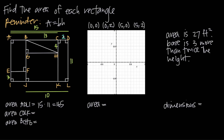Since the length of CD is 2 and I have right angles, the length of KL will also be 2. So the area of rectangle CDLK is base 2 times height 11, which gives us 22 square units.